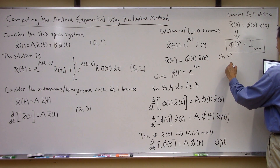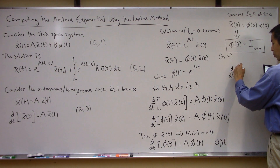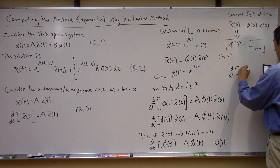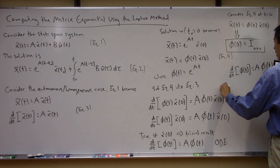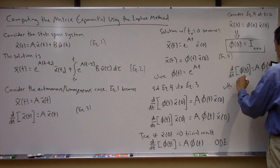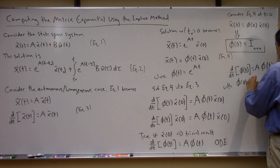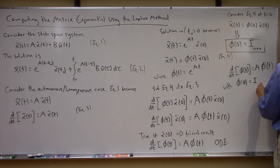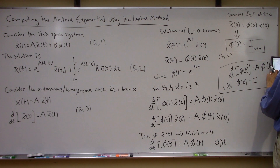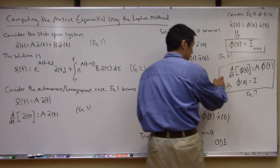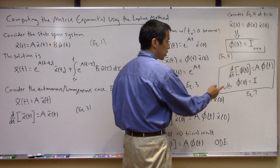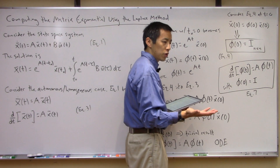To write this all in one concise statement, here is the differential equation we're interested in: phi-dot of t equals A times phi(t), with the initial condition that the state transition matrix at time zero is the identity matrix. Let's call this equation seven. This is what I need to solve — if I can solve this differential equation for the state transition matrix, I should be good to go.